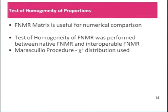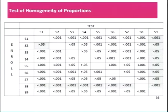The previous matrix identified the false non-match rates numerically, which tells you which one is better or worse. But in terms of statistical similarity, it does not tell you a great deal. So in order to see which error rates were actually statistically similar, a test of homogeneity of proportions was performed. The idea was to see which pairs of data sets had statistically similar error rates.